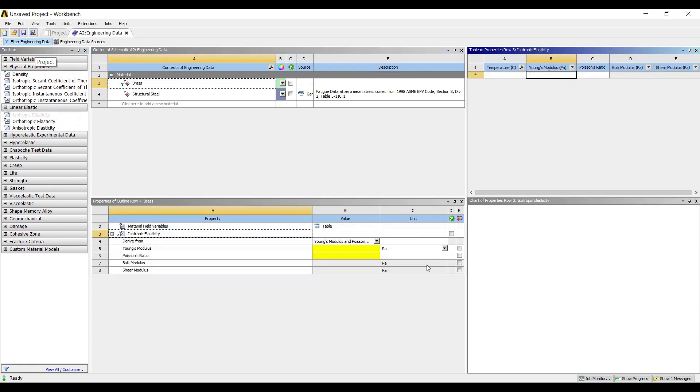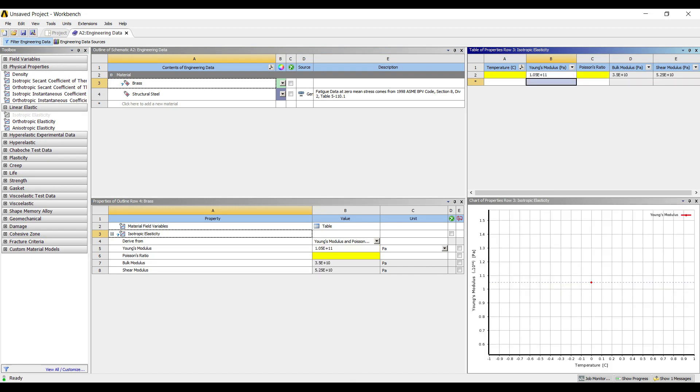The value is given to me as 105 E9. The value given is 105 gigapascal.